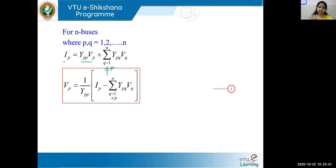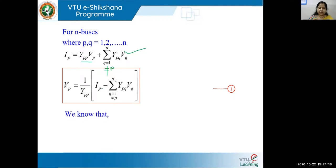From this rearrangement we get VP in equation form. However, the input data is not in the form of IP, so we need to substitute for IP. We know that the conjugate power SP = VP·IP*, which equals PP − jQP. I need the equation in terms of IP, not IP conjugate, so I take SP conjugate.